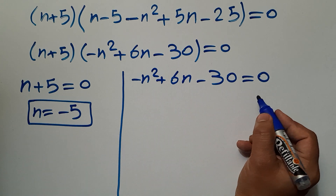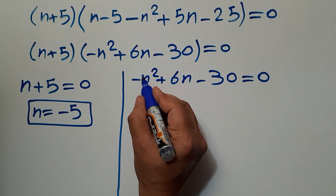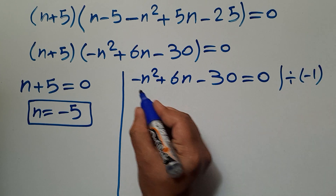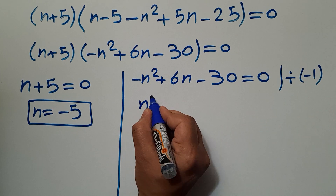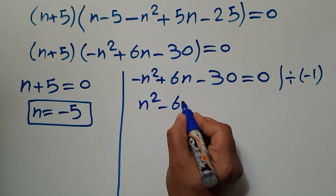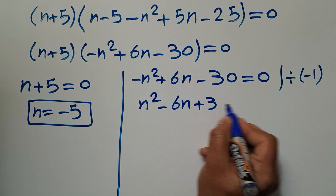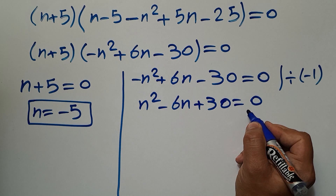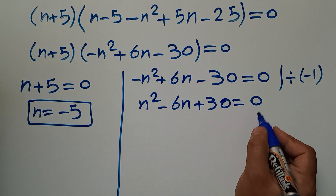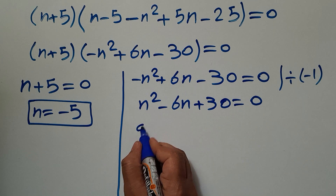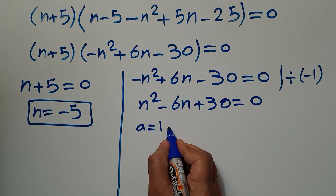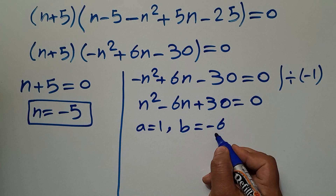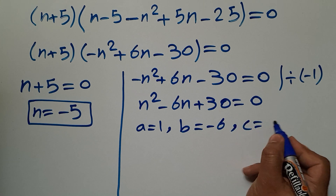For the second factor, let's divide both sides by negative 1, giving us n squared minus 6n plus 30 equals 0. Here we have a quadratic equation where a equals 1, b equals negative 6, and c equals 30.